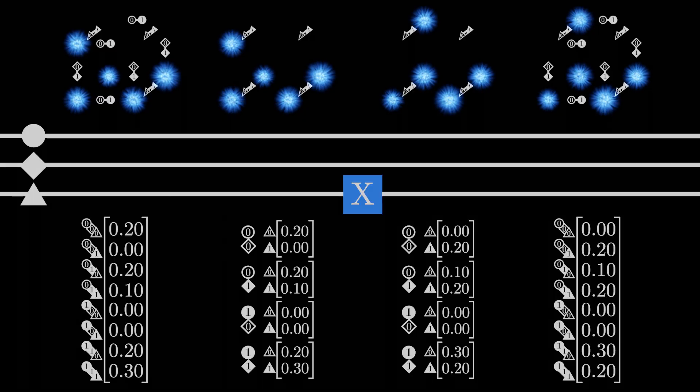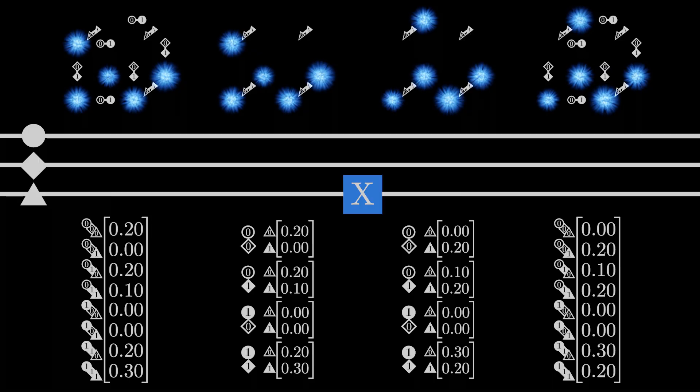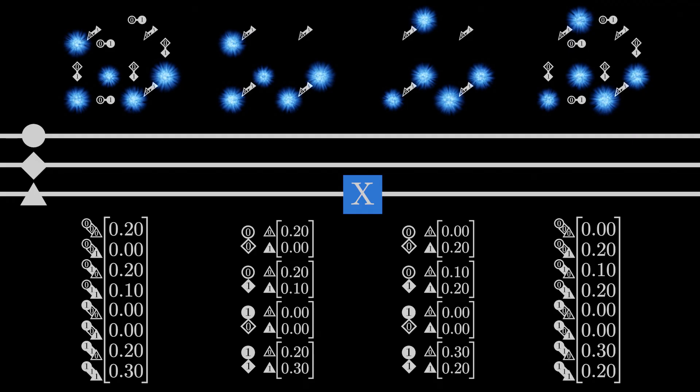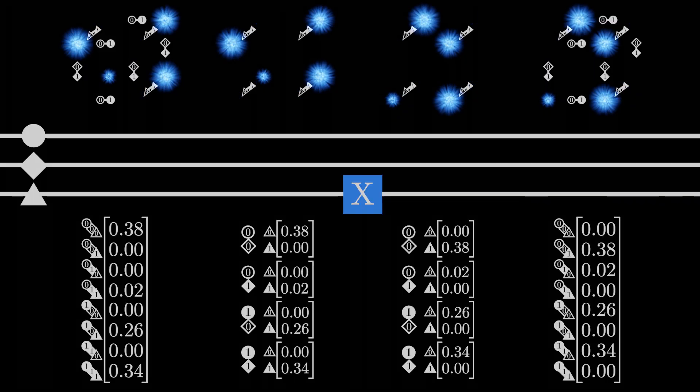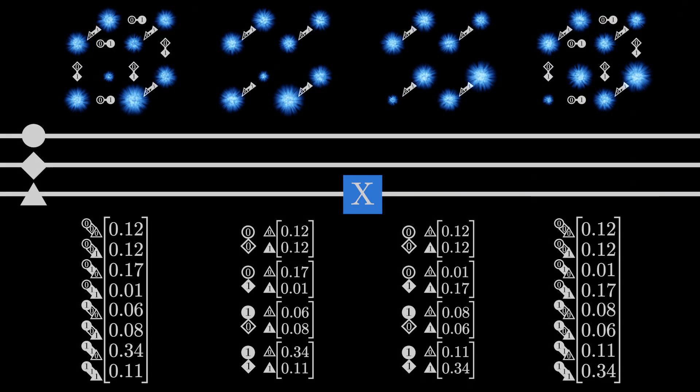Notice also that the not operation is effectively being performed four times in parallel. Each time we add another qubit, we double the number of operations performed by this gate. This should start to give a sense of how quantum computing can be faster than classical computing. Entanglement allows us to perform operations on large quantities of data by passing a single qubit through a single logic gate.